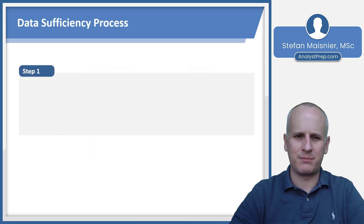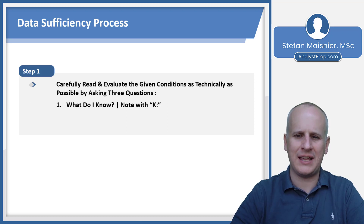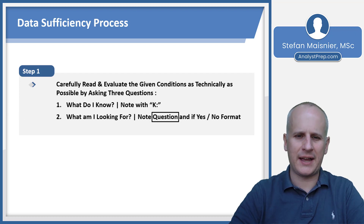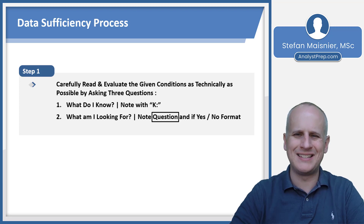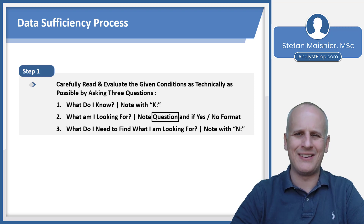Our data sufficiency process, before we go to the whiteboard: first, you need to carefully read and evaluate the given conditions as technically as possible by asking three questions. The first is, what do I know? — note that with just a little K and a colon. You'll then ask yourself, what am I looking for? — note the question as technically as possible, putting a box around it and noting if it's the yes/no format. And the third question is, what do I need to find what I am looking for? — note that with a little N and a colon.